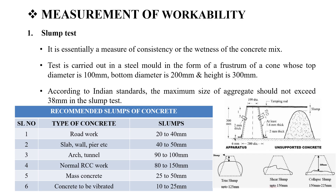The next topic is the measurement of workability. The first test is the slump test. The slump test measures concrete mix consistency using a mold. The top diameter is 100 mm, the bottom diameter is 200 mm, and the height is 300 mm. As per Indian Standard, the slump test is used for aggregate size up to 38 mm.